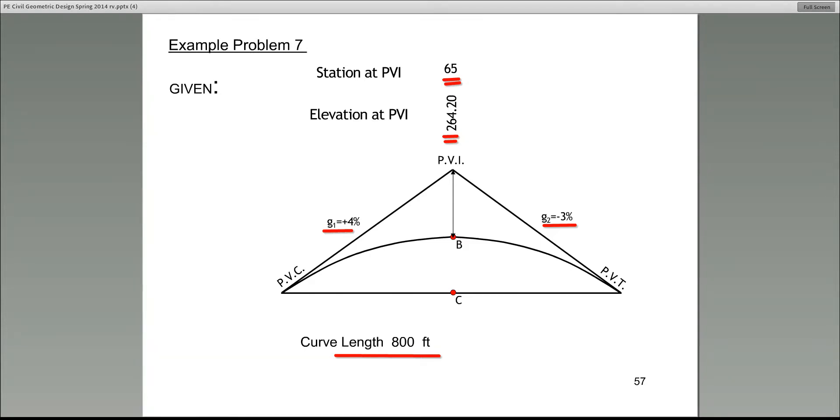Let me tell you about the stationing of this. We are going to show the stationing on the horizontal axis. So station 65 is here. The stationing is done on the horizontal plane. So now pay attention.